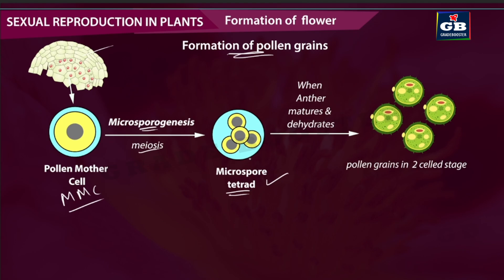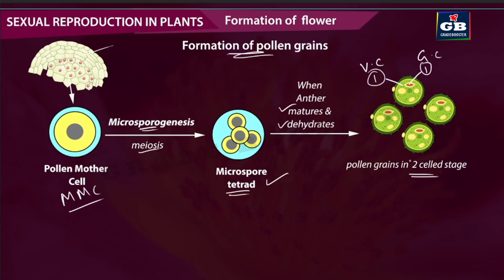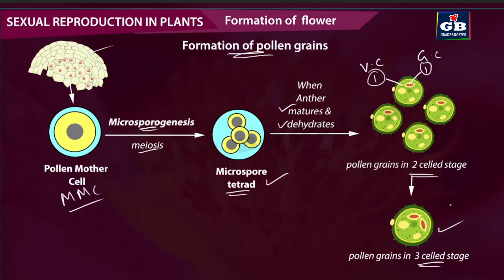When conditions favor maturation — when the anther matures and dehydrates — the microspore tetrad separates into individual microspores, each developing into a pollen grain ready for release. Usually the pollen grains formed in microsporogenesis are in a two-celled stage: each pollen grain contains two cells. In some plants, however, the pollen grains develop further to a three-celled stage before being released.